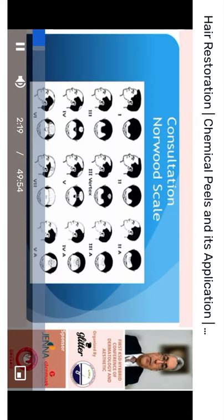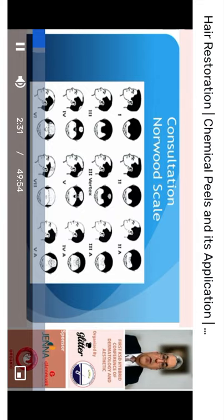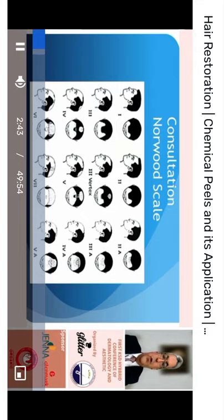Consultation: we start with an assessment of the cause of hair loss and determine if it is suitable for FUE, then evaluate the severity. Androgenic alopecia is the main indication for FUE, and we usually use the Norwood scale to evaluate the severity.